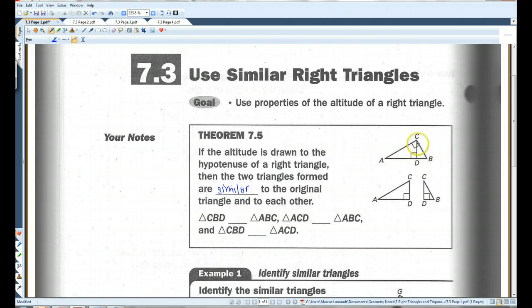This triangle, if you were to draw an altitude that's a line perpendicular to the hypotenuse, this triangle is similar to this triangle, which is similar to the whole triangle. Triangle CBD is similar to triangle ABC. Triangle ACD is similar to triangle ABC. And CBD and ACD are also similar to each other.